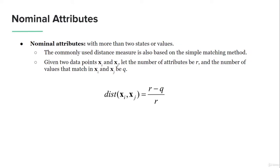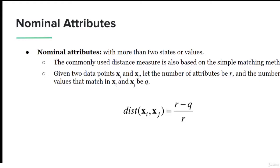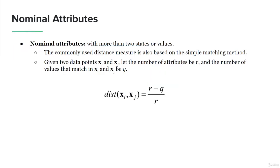Finally, let's talk about nominal attributes — those with more than two possible states or values, which arise in multi-class classification problems. The commonly used distance measure for nominal attributes is based on the simple matching method. It takes two data points xi and xj, where the total number of attributes is R and the number of matching values is Q. We subtract the number of matching values from the total and divide, giving us the distance for nominal attributes.